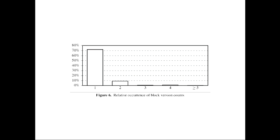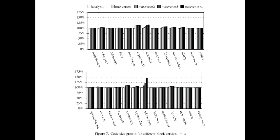Now this is the code size growth for different block version limits. When I explain basic block versioning to people, the first thing they worry about is that if you're going to compile multiple versions of code, you could have a lot of code bloat — generating a ton of machine code which would really impact instruction cache performance. But as you can see, there isn't that much code size increase in practice. Even with no basic block version limits, the worst case on those 26 benchmarks is less than 50% code size increase, and on average the code size increases by only 4%.